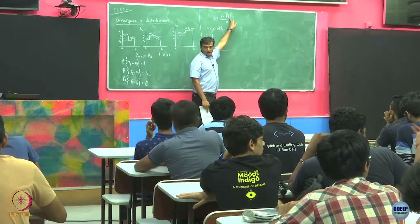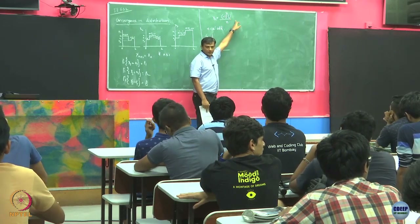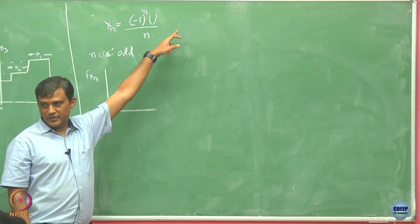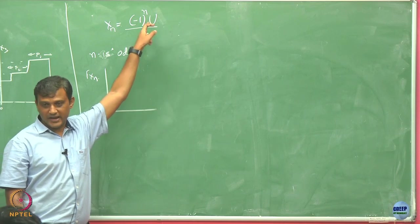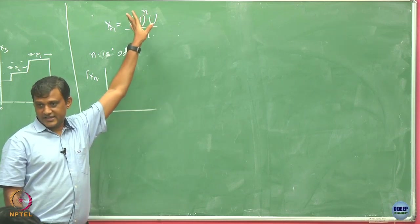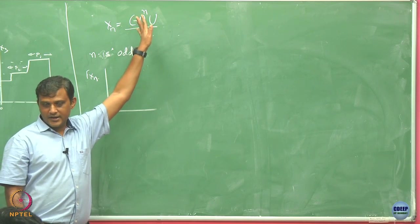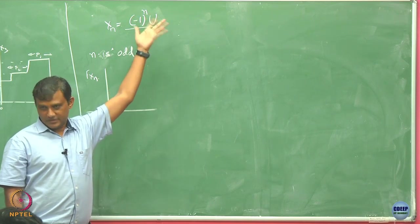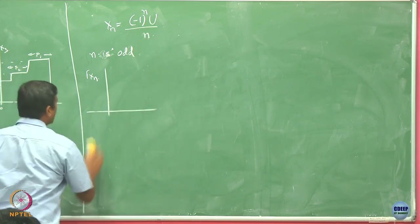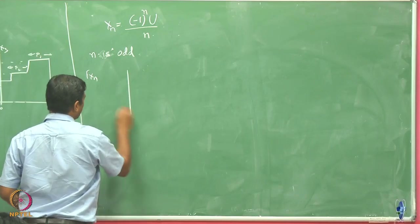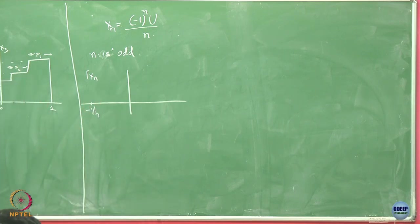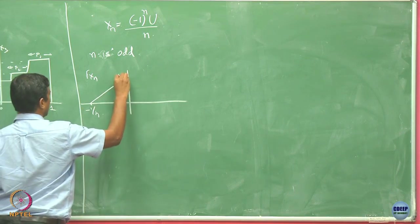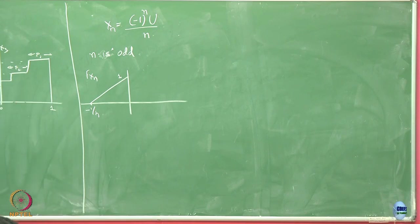If n is odd, this random variable is going to be negative. u takes values between 0 and 1. Its smallest value is when u equals 1, giving -1/n, and its largest value is 0. So if you look at its CDF, it starts from -1/n and goes linearly all the way up, hitting 1 at 0.